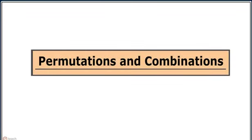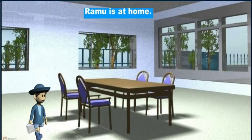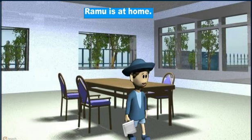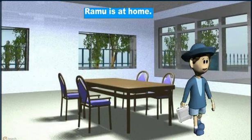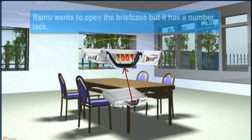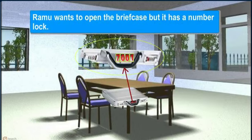Let's get introduced to the topic permutation and combination. Consider an example. Ramu is at home and he wants to open a briefcase, but it has a number lock.